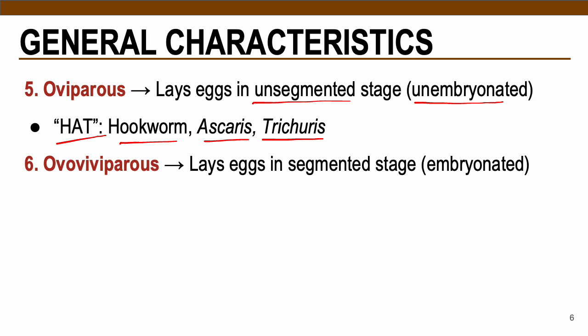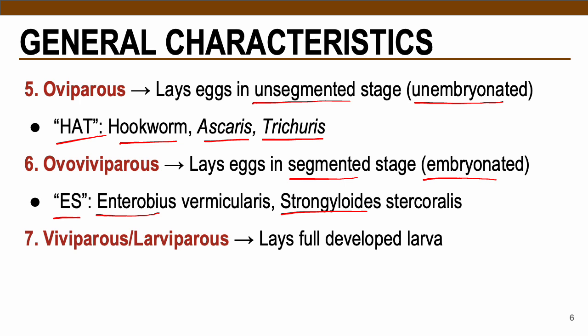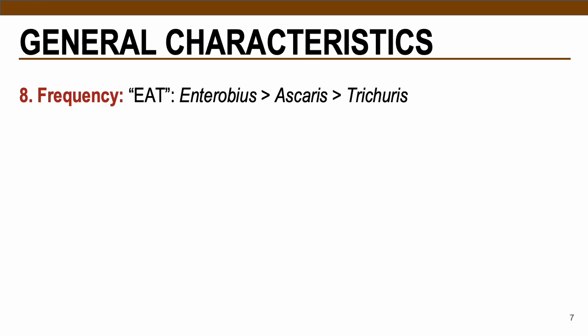Ovoviviparous describes adult female worms that lay embryonated (segmented) eggs, so upon release in the feces these eggs are fully developed. For ovoviviparous female worms we have ES: Enterobius vermicularis and Strongyloides stercoralis. Viviparous or larviparous female worms lay fully developed larvae instead of eggs — all tissue nematodes are considered viviparous or larviparous.